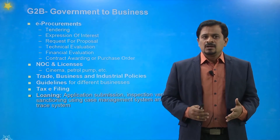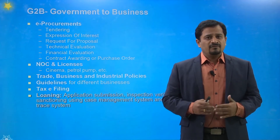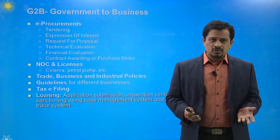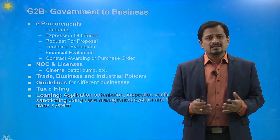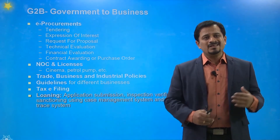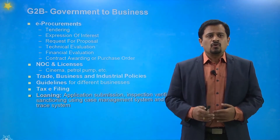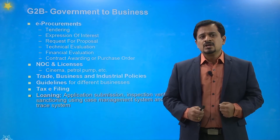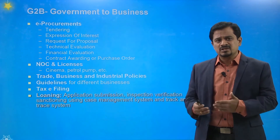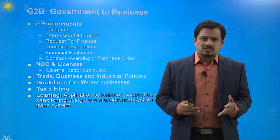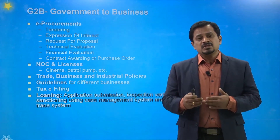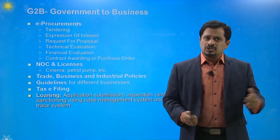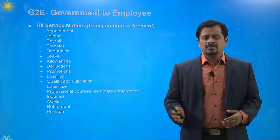Government to business (G2B) — the business sector is the backbone of any country's growth. E-procurement includes e-tendering, e-expression of interest, e-request for proposal, e-technical evaluation, e-financial evaluation, contract awarding, and purchase orders. NOC and licenses for common facilities like cinemas and petrol pumps, trading and industrial policies, tax e-filing, and business loan applications including submission, inspection, verification, and sanctioning — all are managed under G2B.